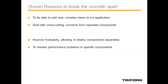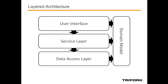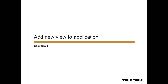Another reason is to improve modularity, which allows us to deploy components separately. We have different components in a monolith and we want to break them apart so that we can deploy them on different machines. And the last reason is to solve performance problems in a specific component. The best way to solve a performance problem is to isolate that component and make sure it has as few interactions with other components as possible, so that we can dive into the specific problem. I assume the application is built in the layered architectural style: a user interface talks to a service layer, which talks to a data access layer, and these modules have access to a domain model used for rendering as well as storage.